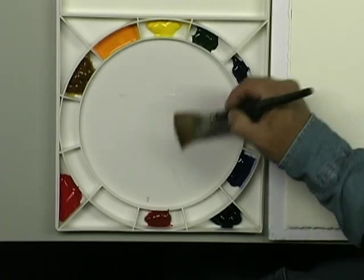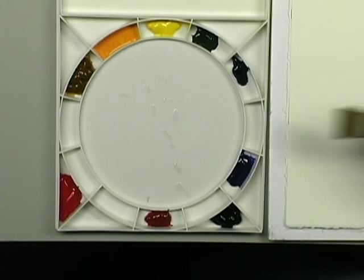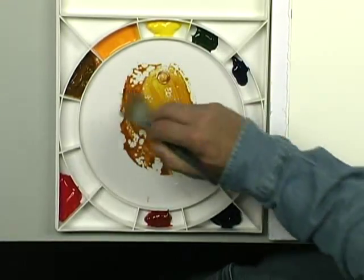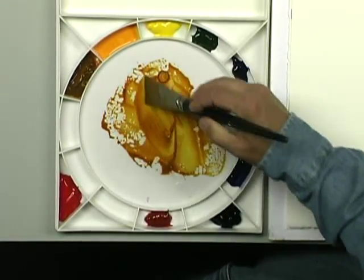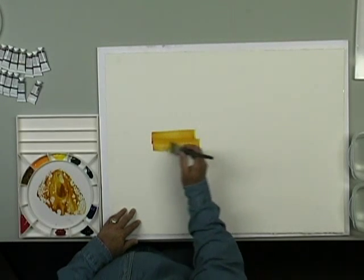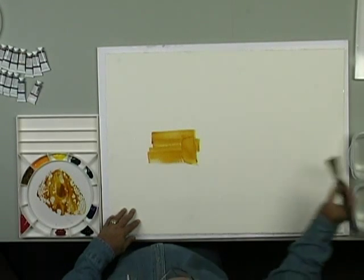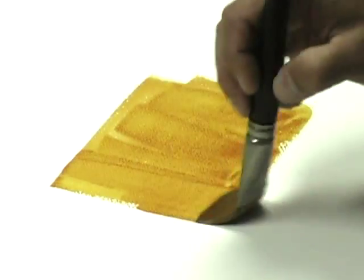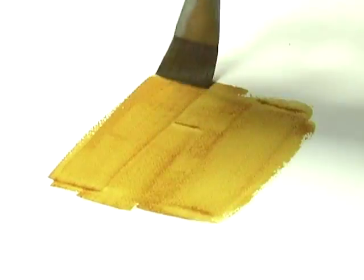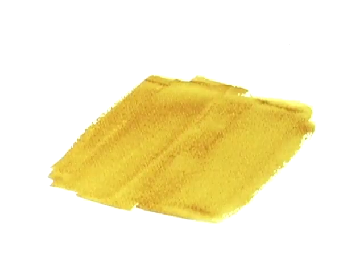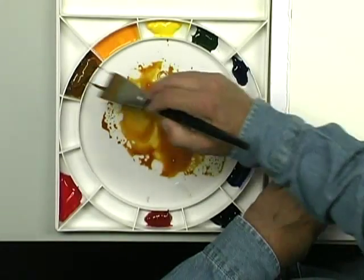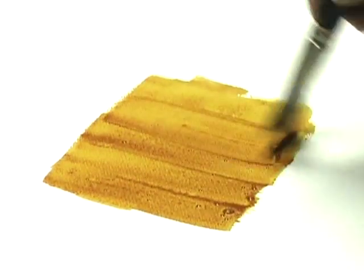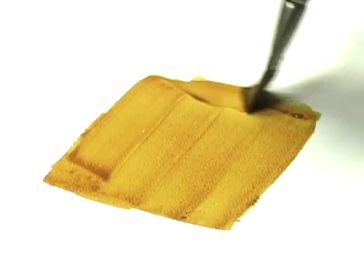I'm going to mix up a wash, and we'll just use straight quinacridone gold. I'm just going to apply a wash in a rectangular shape to this paper. This is wet. It's the first part of our wet into wet. Make this nice and juicy. Very wet.